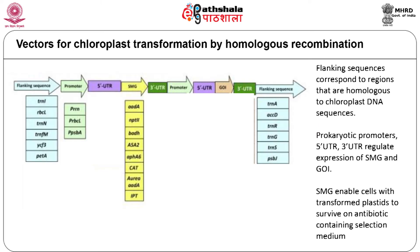The vectors used for chloroplast transformation consist of flanking sequences that are homologous to different loci of the chloroplast genome. The selectable marker gene and the gene of interest are cloned within these flanking sequences. Each gene has a promoter, a 5' UTR, and a 3' UTR, which are chloroplast regulatory elements. The selectable marker genes include nptII or aadA genes that confer antibiotic resistance, due to which untransformed cells are bleached while transformed sectors are green and form shoots, so they are readily recognized.